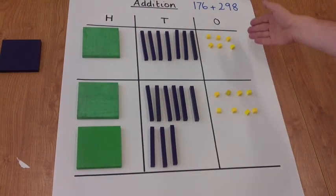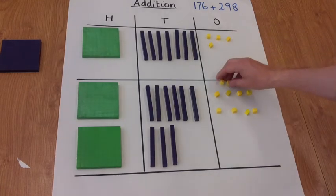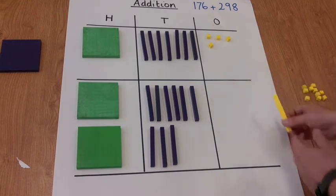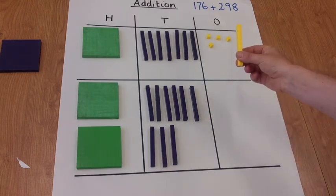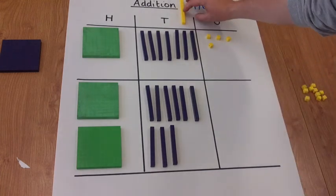So if we look at the ones column, we'll notice that there's 14 ones in there. So what we need to do in that situation is regroup 10 of those ones into a ten, which needs to go into the next column up, the tens column.